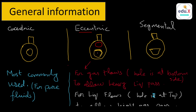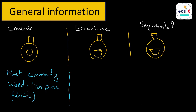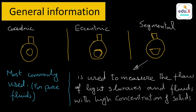The segmental orifice plate is used to measure the flow rate of light slurries and fluids with a high concentration of solids. It is basically used for slurry flow rate measurement calculations.